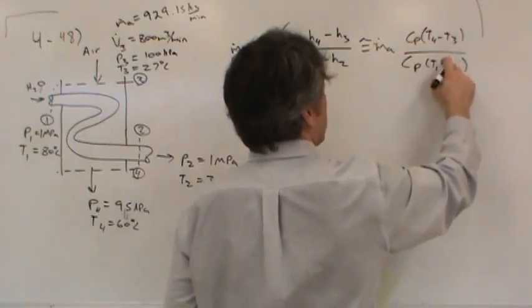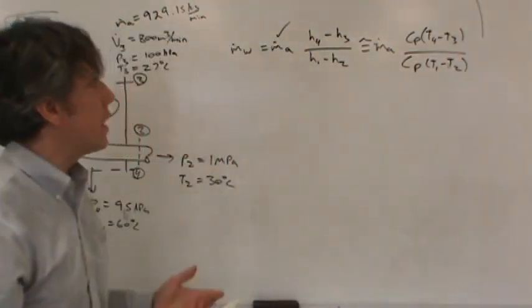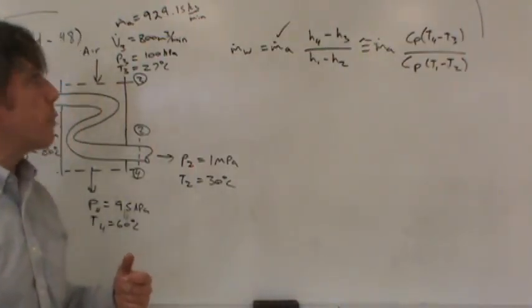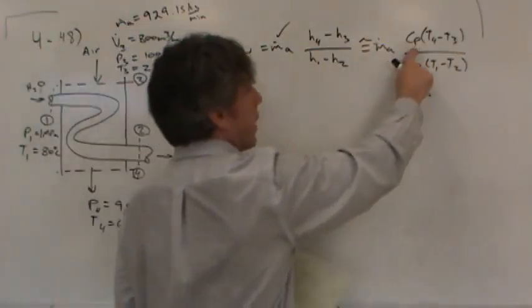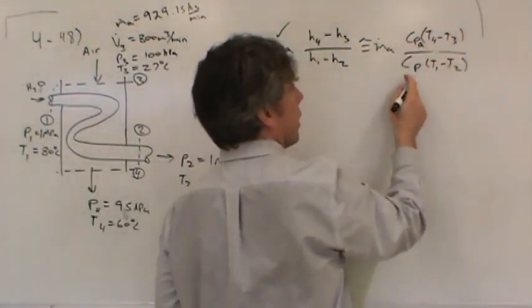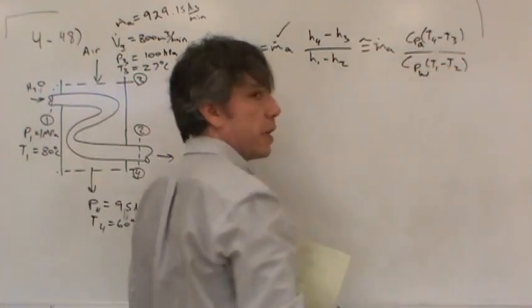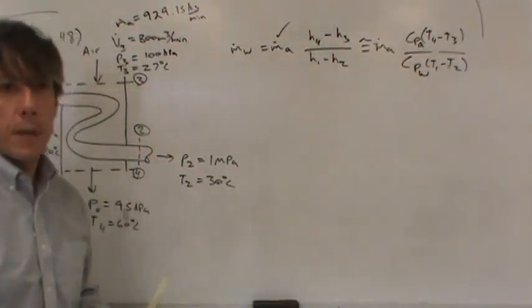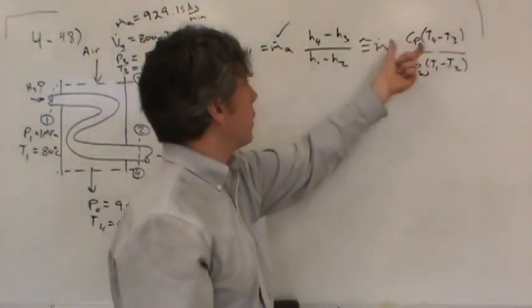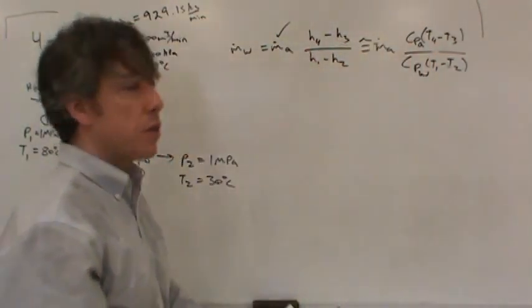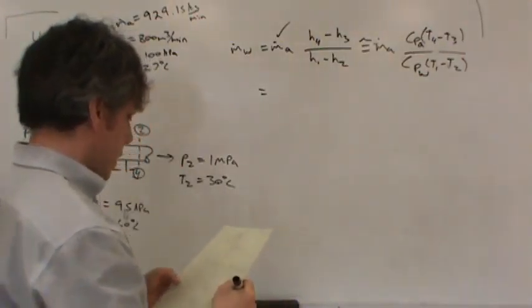So couldn't we use an approximation like this? Couldn't we use CP T4 less T3 and CP T1 less T2? Now, of course, I'm talking about two different heat capacities. One's going to be the heat capacity of water. The other one's the heat capacity of air. Three and four have to do with the air. So this heat capacity is going to be the heat capacity of air. This heat capacity, then, would have to be the heat capacity of water. So far so good. All I'm doing is using CP delta T to represent delta H.